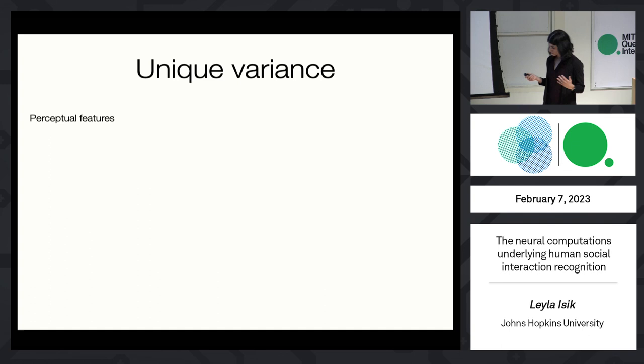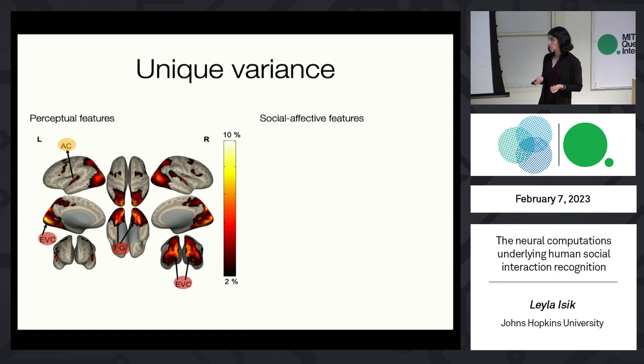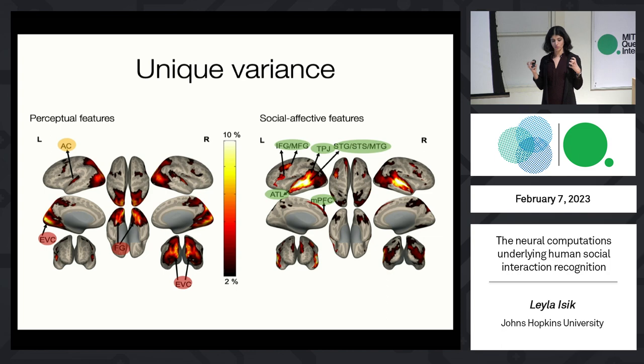As a sanity check, we looked at the unique variance explained by perceptual features — we see significant activity in auditory cortex and also a bunch of visual regions, which is reassuring. Now doing the same for social affective features: I wouldn't have been surprised if this was nothing, because it's a Hollywood movie not designed as a stimulus set. But actually what we see is quite sensible — high variance explained along the STS in theory of mind regions and in frontal action observation regions as well. Even just this was pretty exciting — we could separate the contributions of perceptual versus social features in the movie.